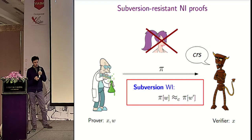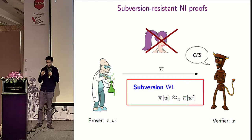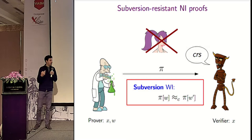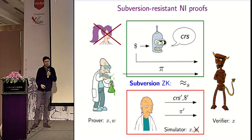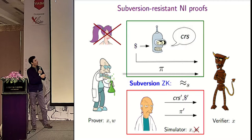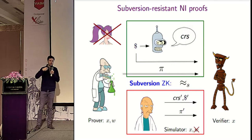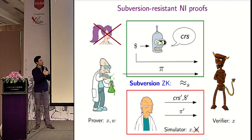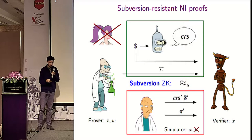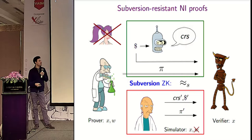We also consider subversion witness indistinguishability, where the adversary outputs the CRS and if the prover uses this CRS to compute proofs, the proofs should be indistinguishable as to which witness was used. The third notion is subversion zero knowledge: we consider a CRS subverter — an algorithm that takes random coins and outputs a CRS — and we want a simulator that can simulate the full view of this subverter, including the coins used, and also simulate proofs. If these two worlds are indistinguishable, the scheme is subversion zero knowledge.